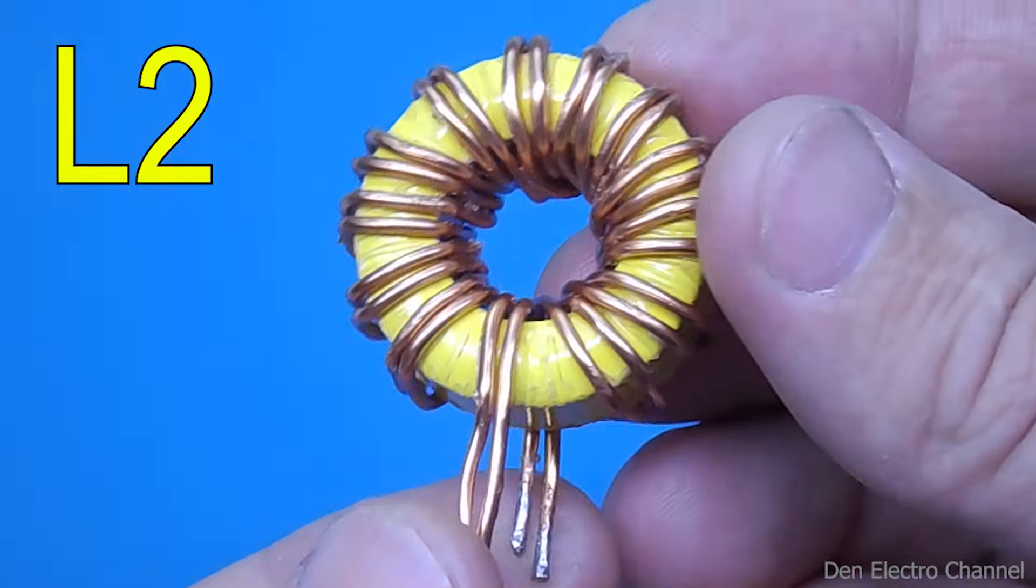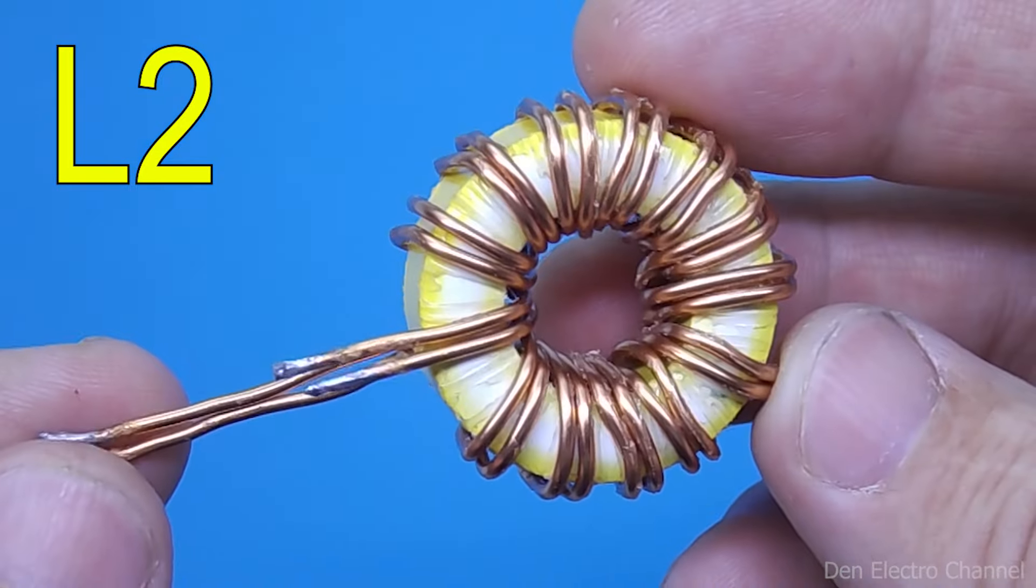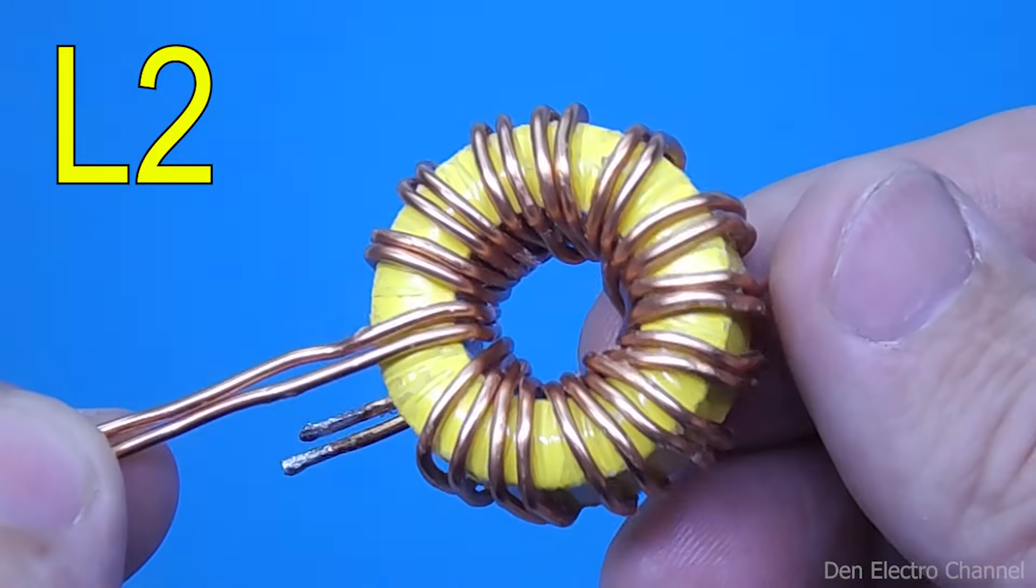These wires, about one millimeter in diameter, need to be made from 12 to 15 turns. Distributing them evenly throughout the ring.